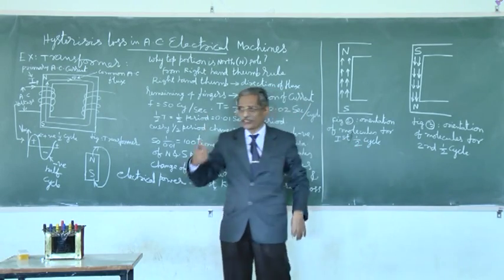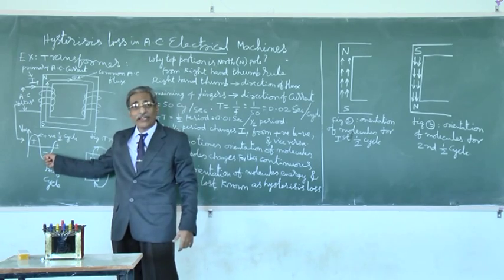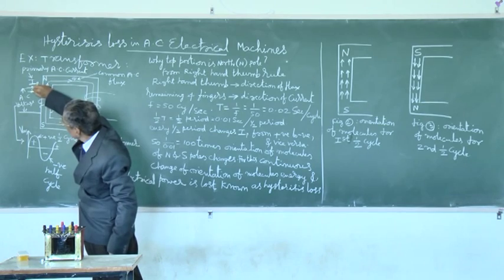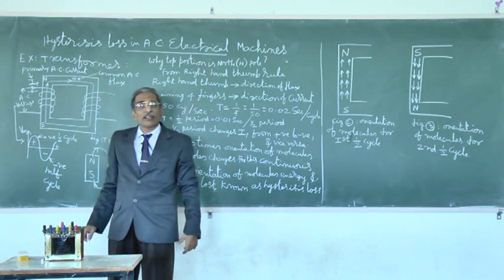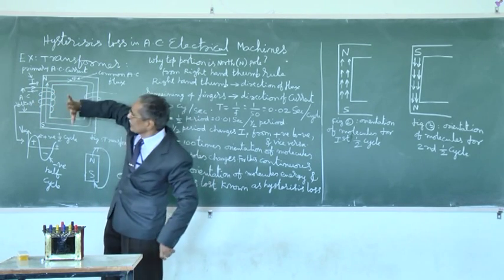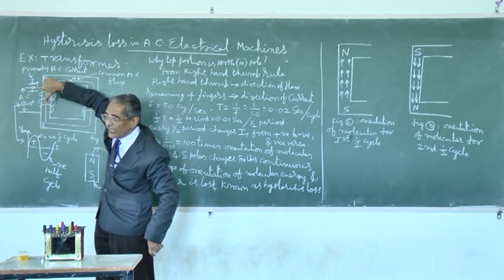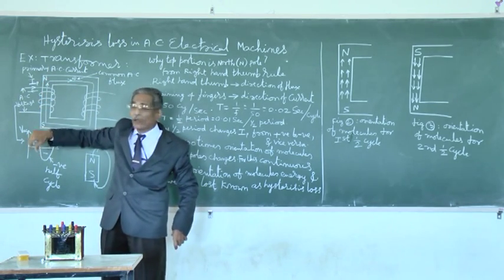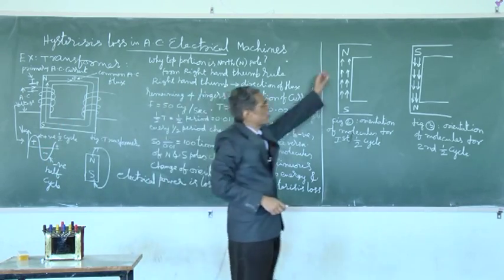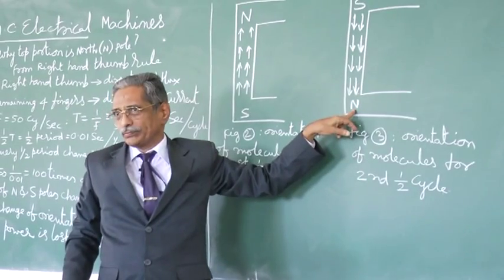Now, let us go to second half cycle. Second half cycle, it is negative. Means current direction is reversed like this. When current direction is reversed, again you put fingers like this. Like this means flux direction will be downwards. Means opposite direction. Direction is opposite. Direction will be north pole.